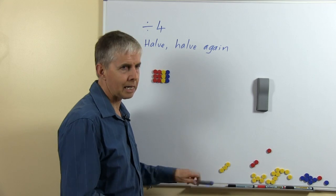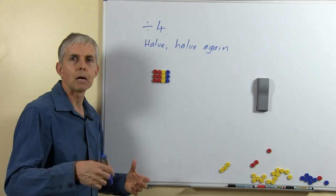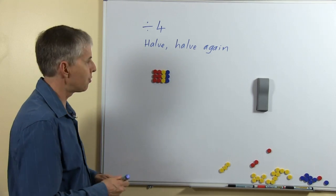The recommended strategy that we have this time is to halve a number and halve it again. This is the reverse of doubling and then doubling again for 4 times.